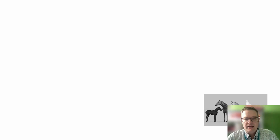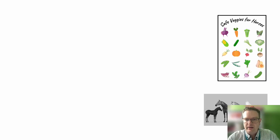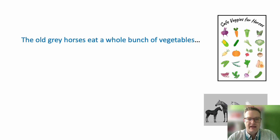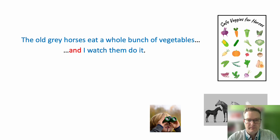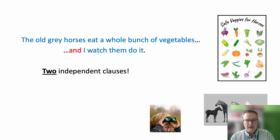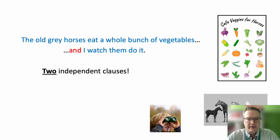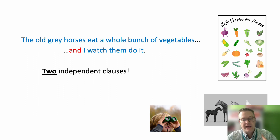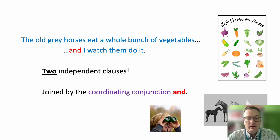Maybe you've got something like this. Here are the old grey horses again — they're behind my camera. And here's my vegetables. The old grey horses eat a whole bunch of vegetables — so far so good — and I'm watching them do it. So here you've got two independent clauses. Each clause has a subject and a finite verb with a predicate built off of it. In the first one, the subject's the old grey horses, and the finite verb is eat. And then we've got another clause with a subject — I — and the finite verb watch. So we've got two independent clauses, and I've joined them with the coordinating conjunction and.